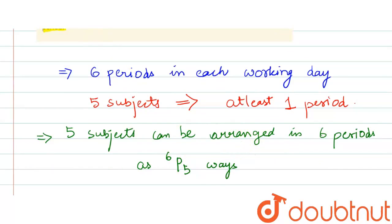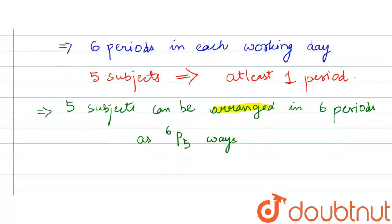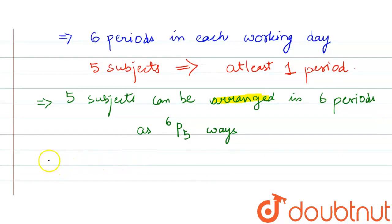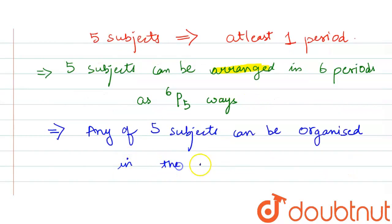As we have to arrange in this situation, we will use permutations. Now for selecting one period for five subjects, any of the five subjects can be organized in the remaining period.